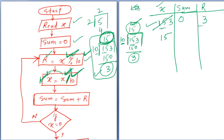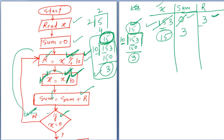Then we move to the next step: sum is equal to sum plus r. Sum is 0, r is 3, so 0 plus 3 is 3. Sum is updated to 3. Then I have to check the condition: if x is equal to 0. Is x equal to 0? No, x is 15. So we take the no branch and repeat the steps from the beginning of the loop.